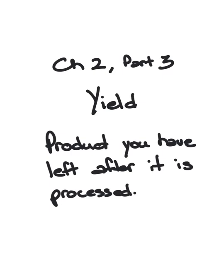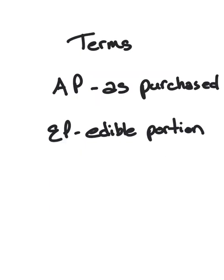Welcome to Baking Chapter 2, Part 3: Yield. Yield is the product that you have left after you have processed it. We're going to learn two new terms here: AP and EP.